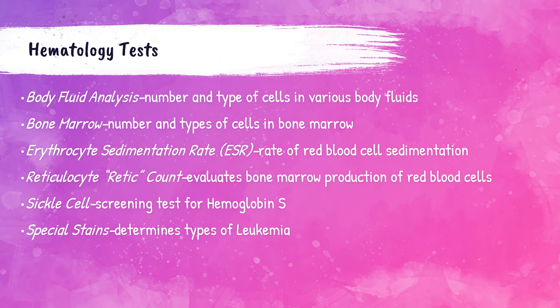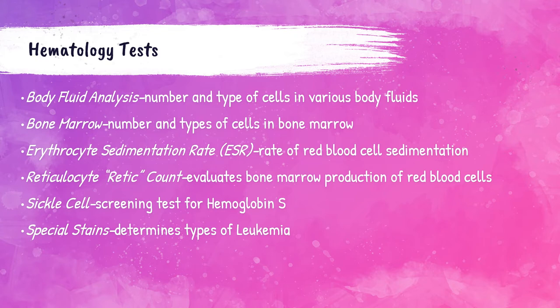The hematology department also performs cell counts on body fluids like synovial fluid from the joints or cerebrospinal fluid from the spinal cord, determining the number of red and white blood cells present. They can also evaluate bone marrow biopsies, which determine the type and number of cells within the bone marrow. Sedimentation rates (sed rates) measure how quickly red blood cells settle and monitor inflammatory activity. Reticulocyte counts evaluate the body's production of red blood cells. The department can also perform screening tests for sickle cell disease and special cytochemical stains to determine types of leukemia.